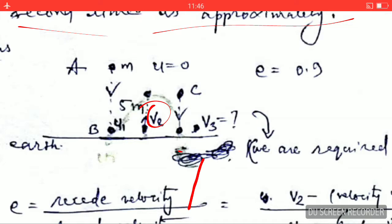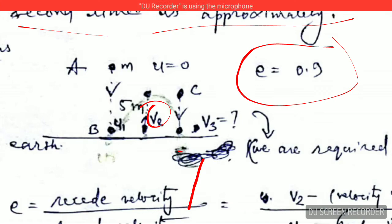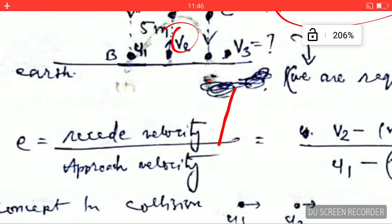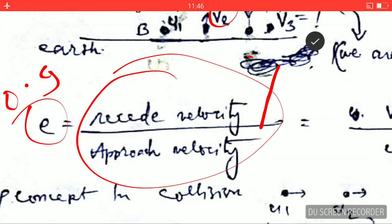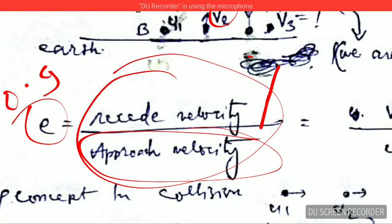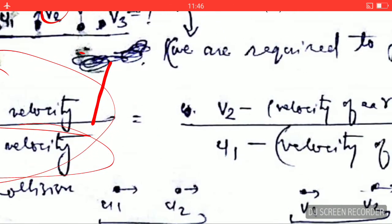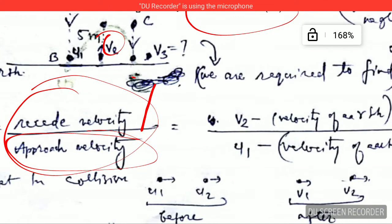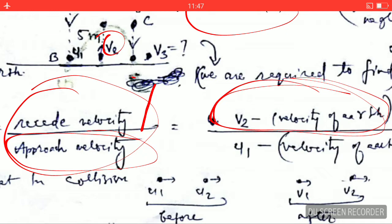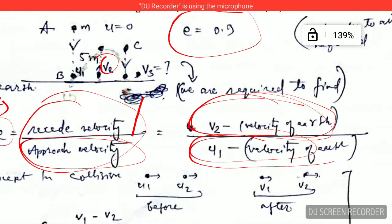It is important to note that the coefficient of restitution is less than 1, so the collision is an inelastic collision. The coefficient of restitution given to us is 0.9, and it equals the recede velocity upon approach velocity. Recede velocity is the velocity with which the objects are going away from each other, and approach velocity is the relative velocity with which they are coming close to each other.